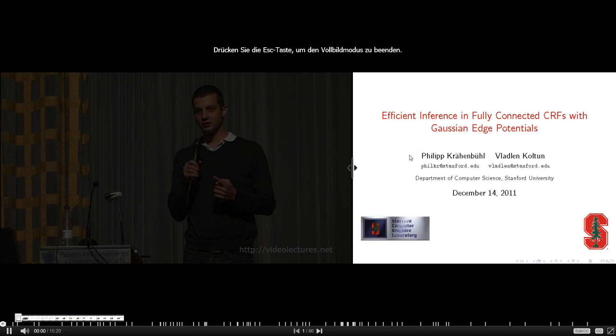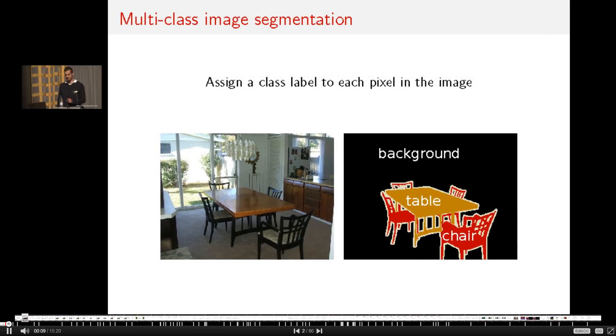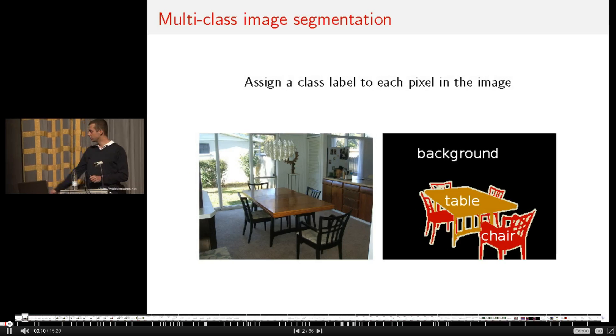The problem we're looking at in this paper is multi-class image segmentation, which is assigning a class label to every pixel in an image, where class labels can, for example, be chair, table, or background.